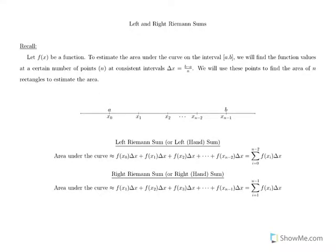We're going to do a lot of what we did in section 5.1. We're just going to get rid of the velocity and distance interpretation and just talk about functions in general. Let f be any function, not just representing velocity. And we're not going to find distance traveled, but we're going to find the area under the curve on the interval a to b. That's what we're trying to find, and we found that that is the same thing as finding distance traveled if f is velocity.